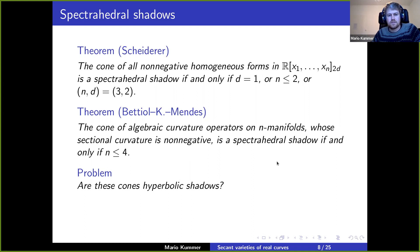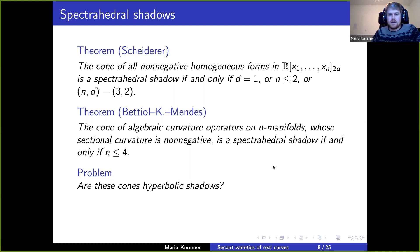It could still be that these counterexamples are hyperbolic shadows. If that were the case, the generalized Lax conjecture would be false, since it even states that hyperbolicity cones and spectrahedral cones are the same. On the other hand, it could also be that every hyperbolic shadow is a spectrahedral shadow — which would follow if the generalized Lax conjecture were true. Or the answer could be yes only up to taking linear images, even if the generalized Lax conjecture is false.